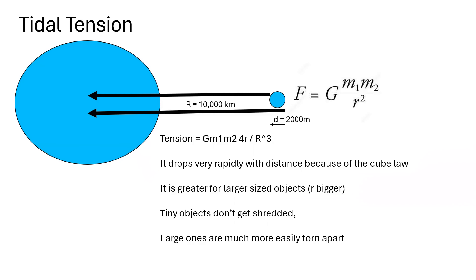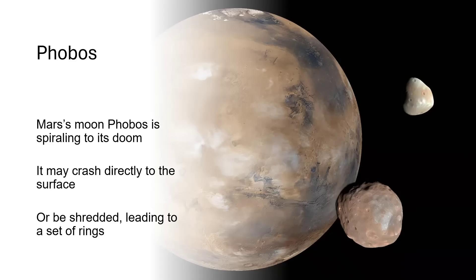Notice the tension also depends on little r — the size of the moon — so the larger the moon, the greater the tension. Tiny objects are safe and don't get shredded, which is why ring particles up to the size of cars or buses are fine. But anything larger suffers considerable tension and is likely to get torn apart. If you go within a certain distance where the tension exceeds the strength of your object, you will get shredded — that's why the large planets have rings.